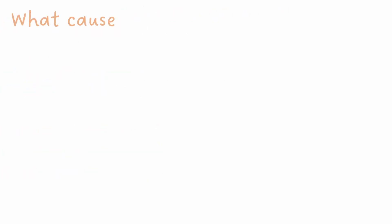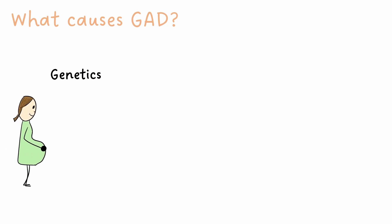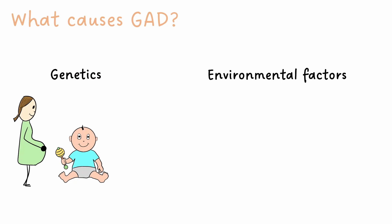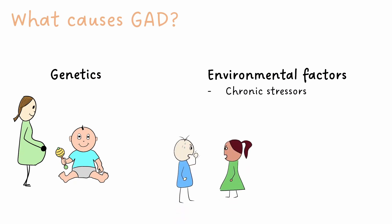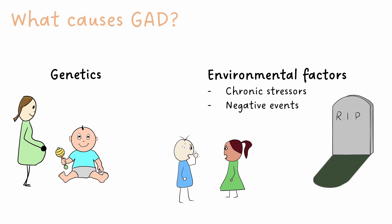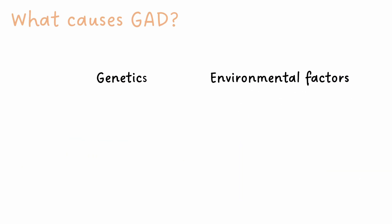What actually causes Generalised Anxiety Disorder? Well, that depends on what level you look at anxiety. Broadly speaking, Generalised Anxiety Disorder has genetic links, with people born to parents with Generalised Anxiety Disorder being at higher risk. But it has stronger links to environmental factors. These include things such as chronic stressors, like living with a difficult marriage, or experiencing negative events, like losing a loved one. These two broad factors contribute to inducing the pathophysiology of anxiety.